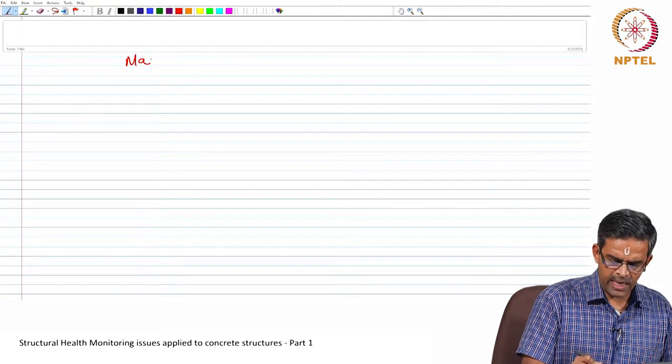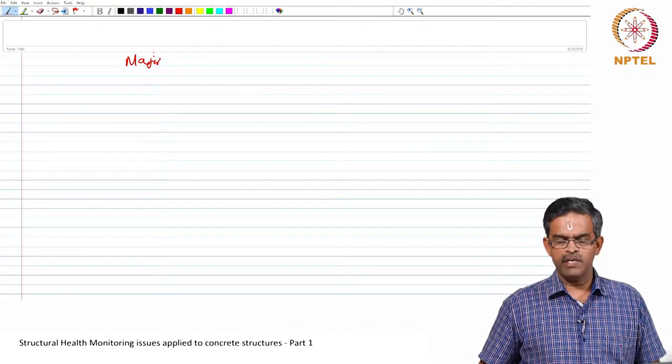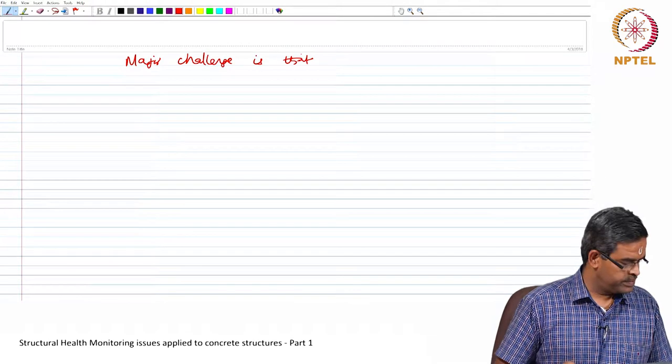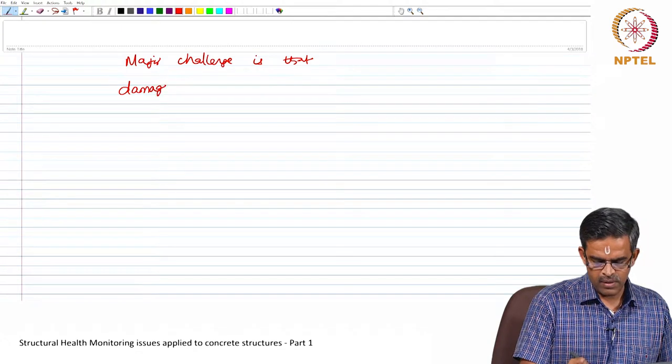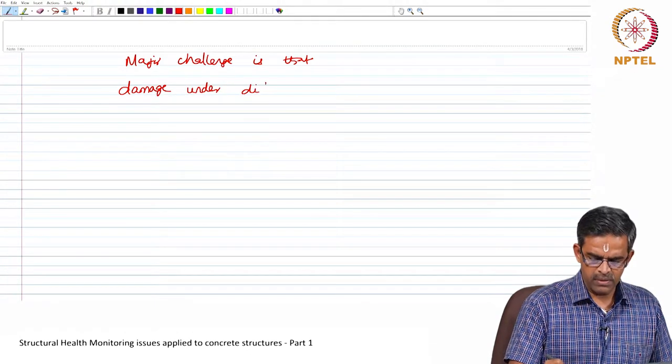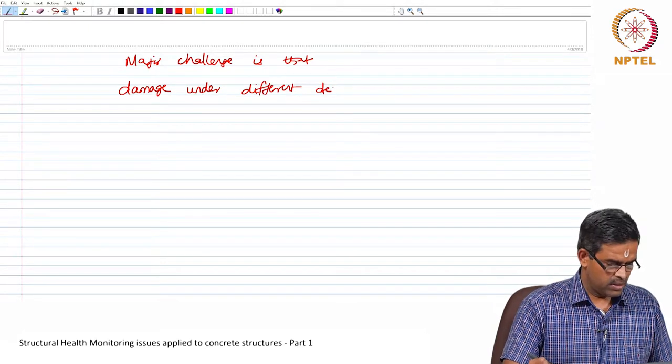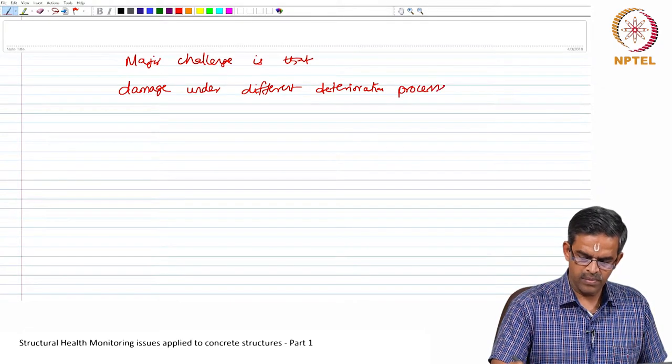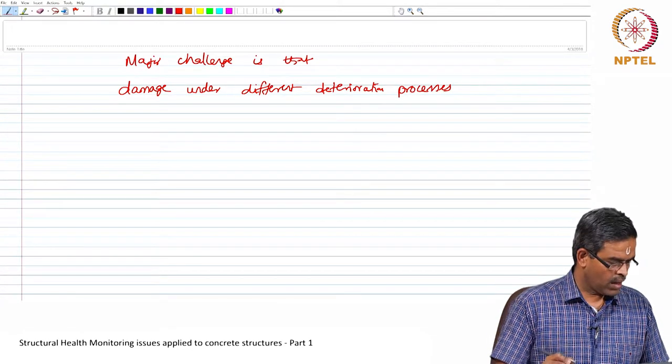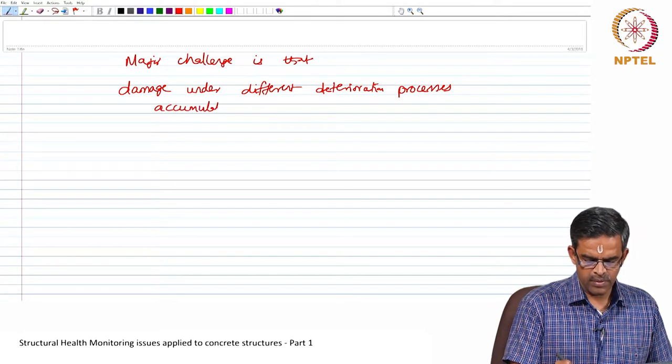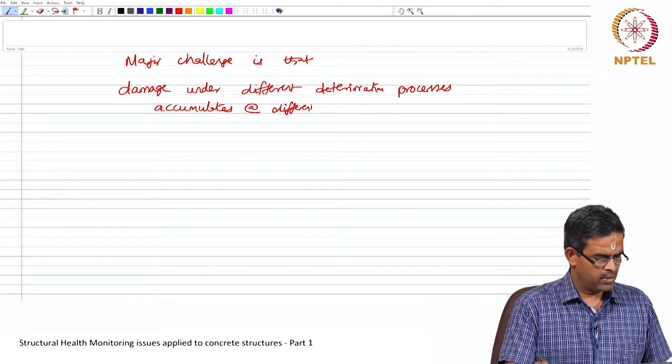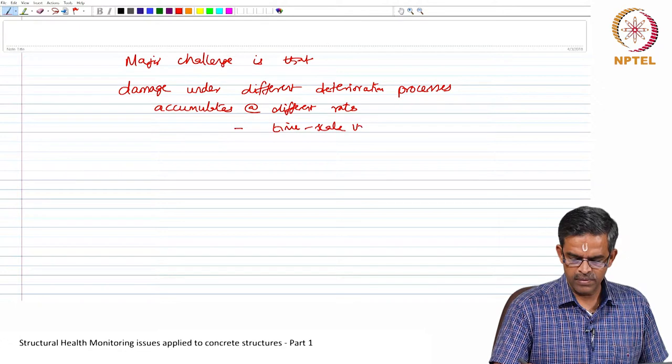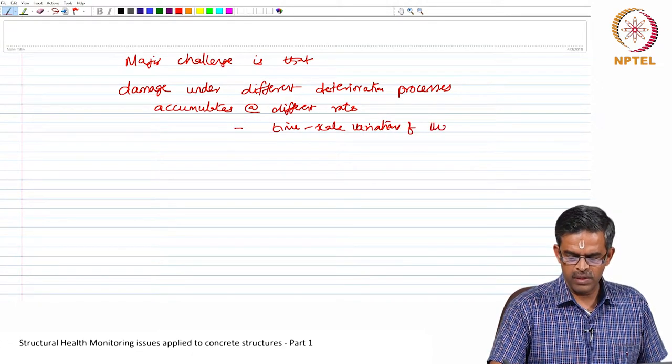So, let us quickly say what would be the major challenge then if we really wanted to monitor its health. The major challenge is that damage under different deterioration processes accumulates at different rates, that is the time scale variation of these degradations.